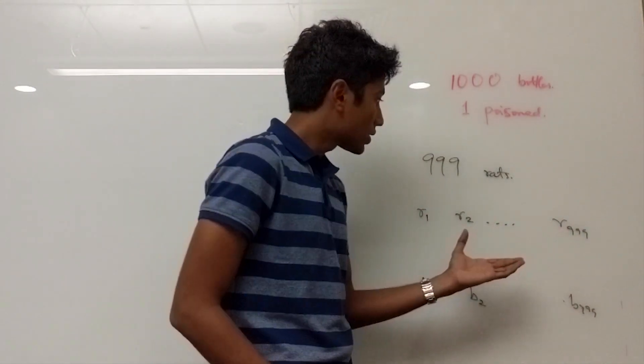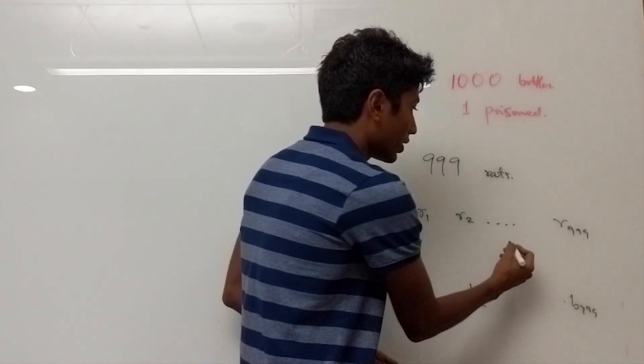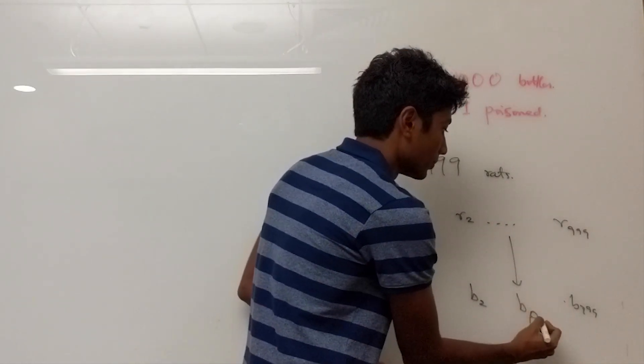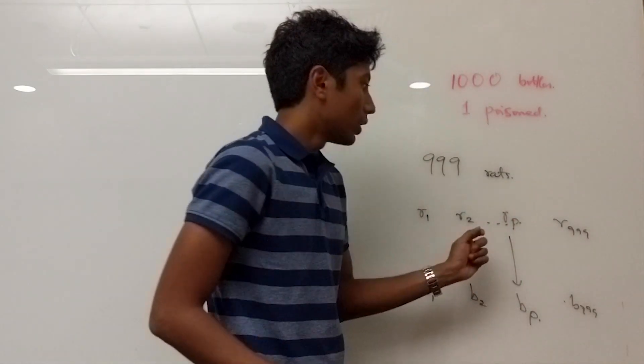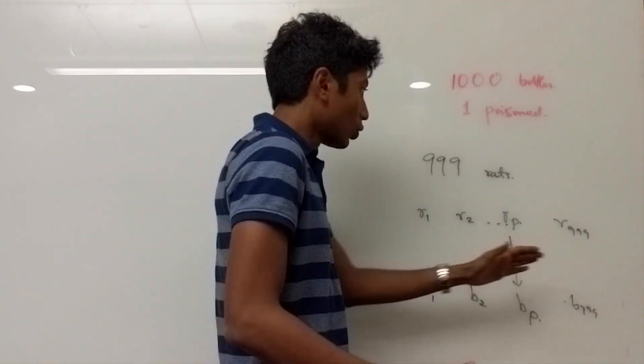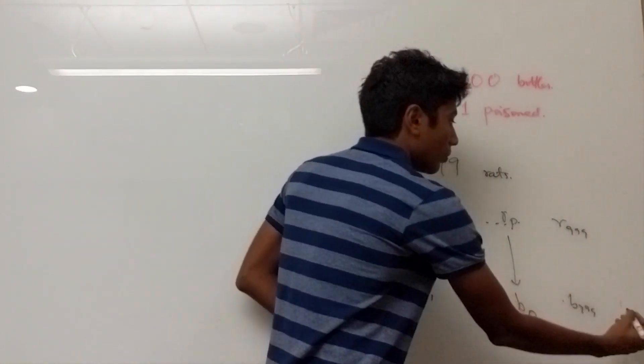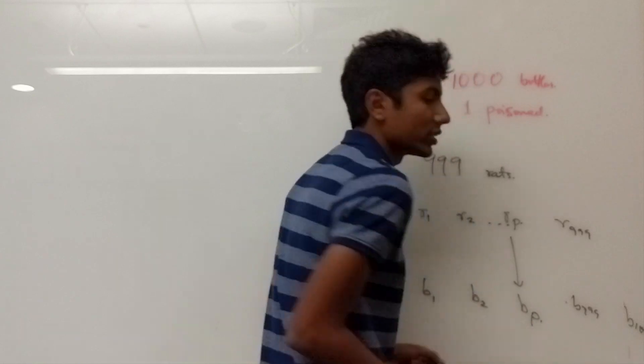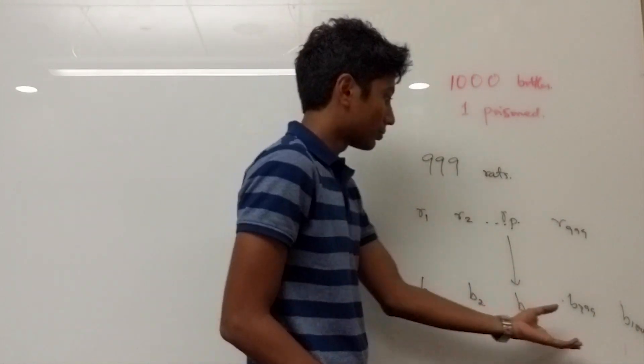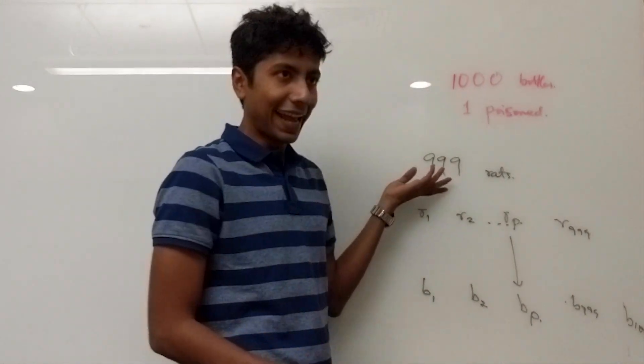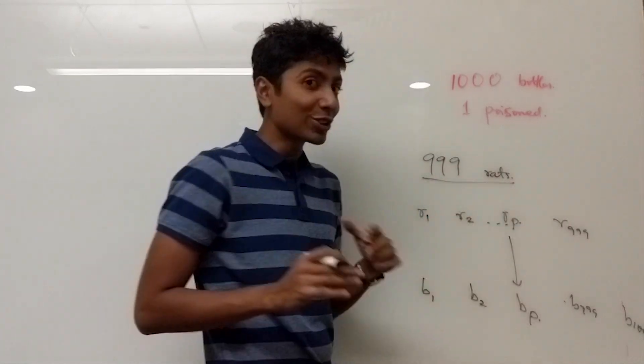Whichever rat dies amongst these is the rat corresponding to the bottle poisoned. There is one catch though, if none of the rats die then we know that the last bottle which is bottle number one thousand is the poisoned bottle. So in this way we just need to catch 999 rats and that's not something that we want to do.